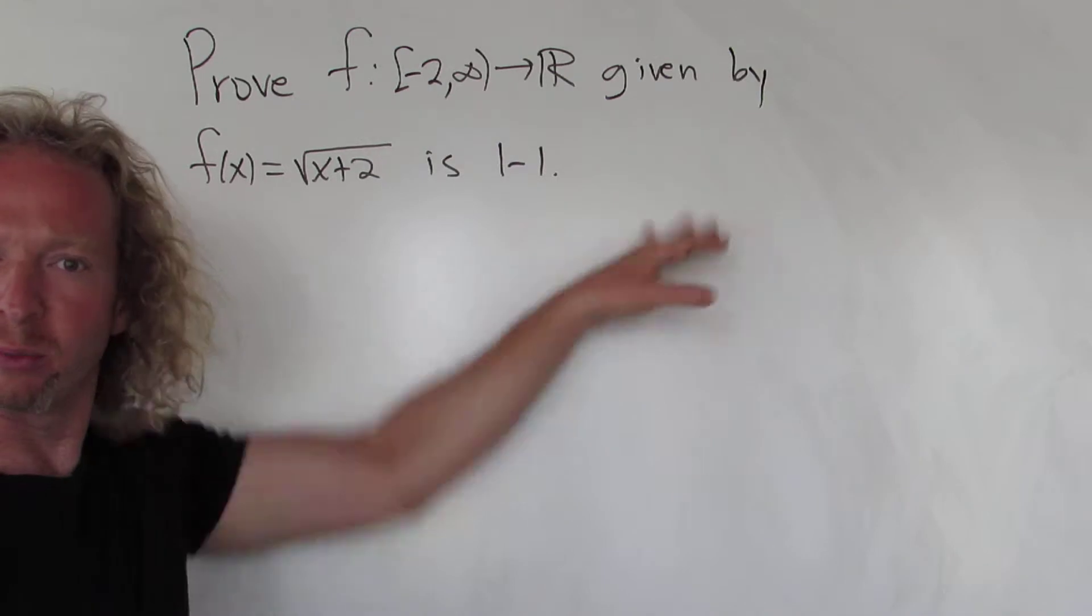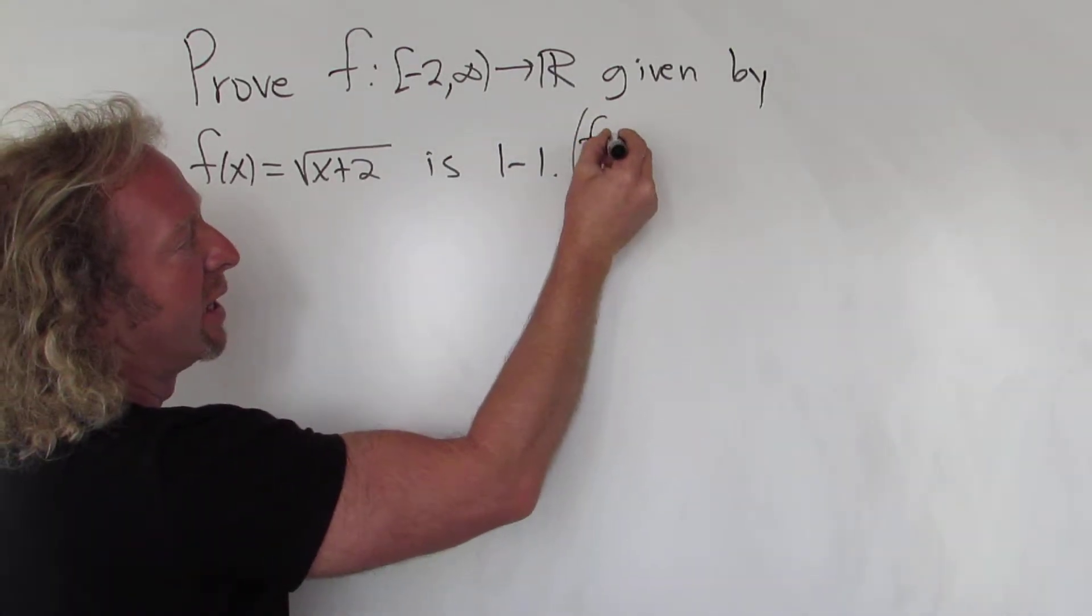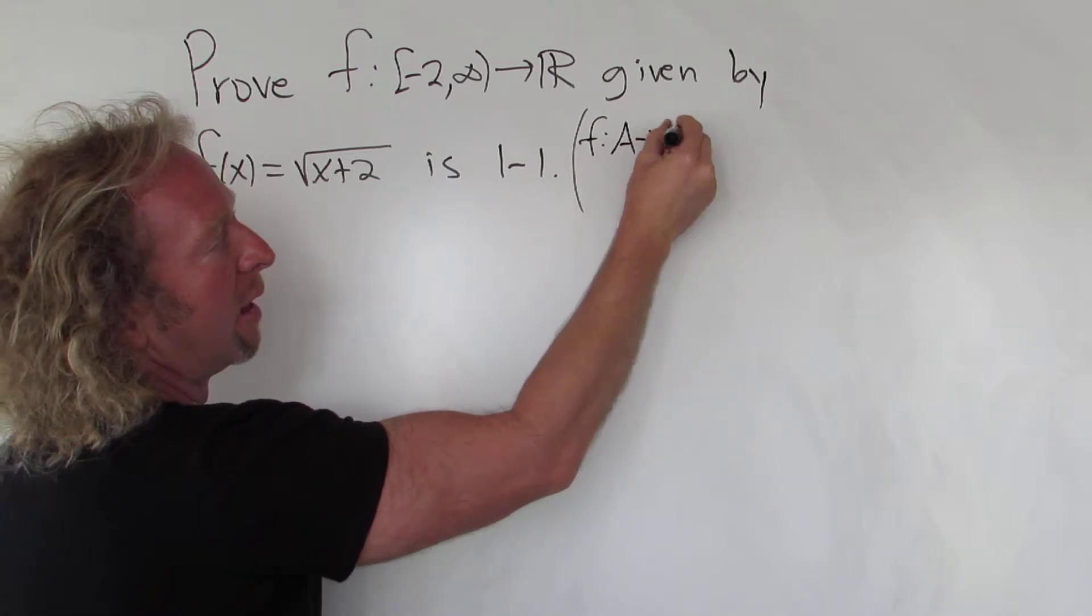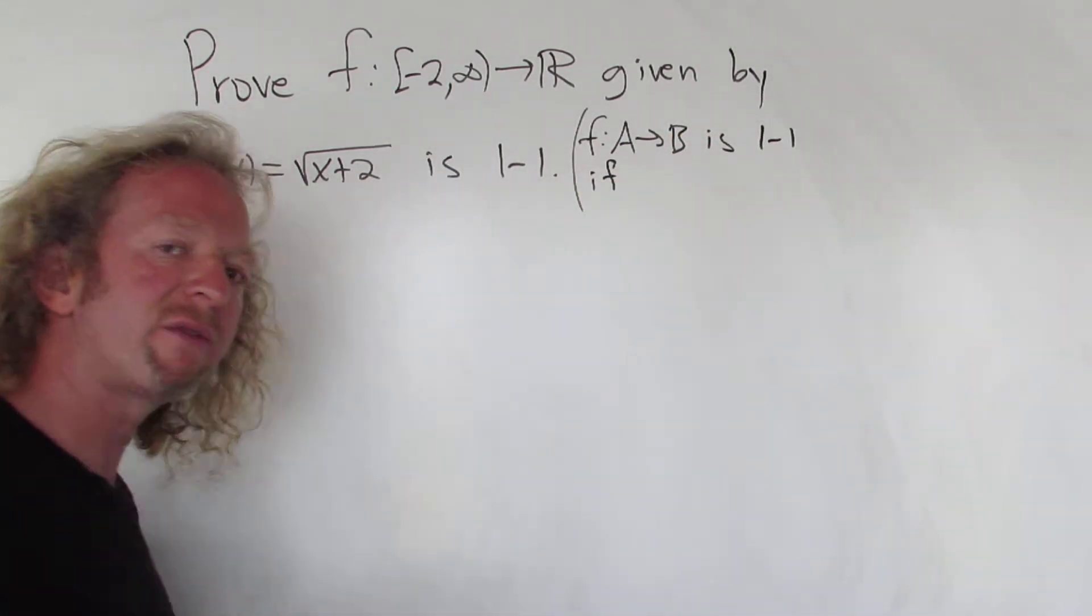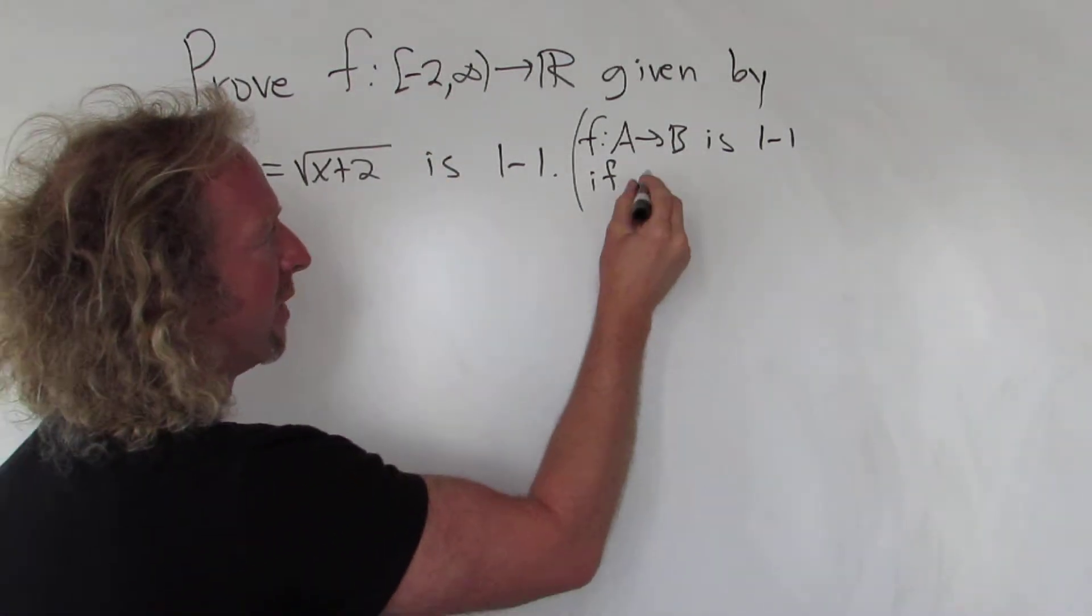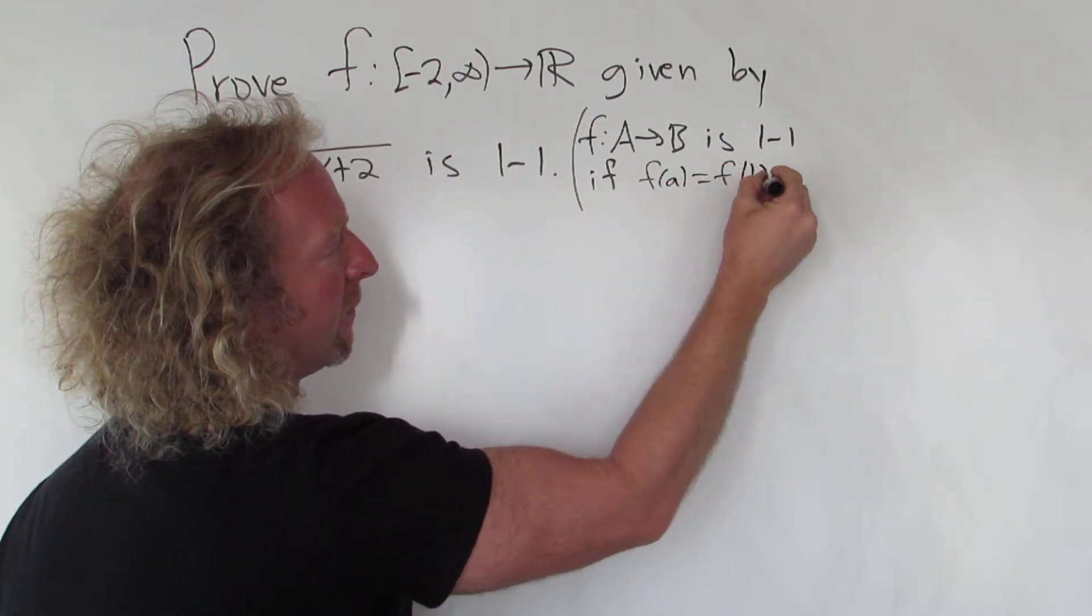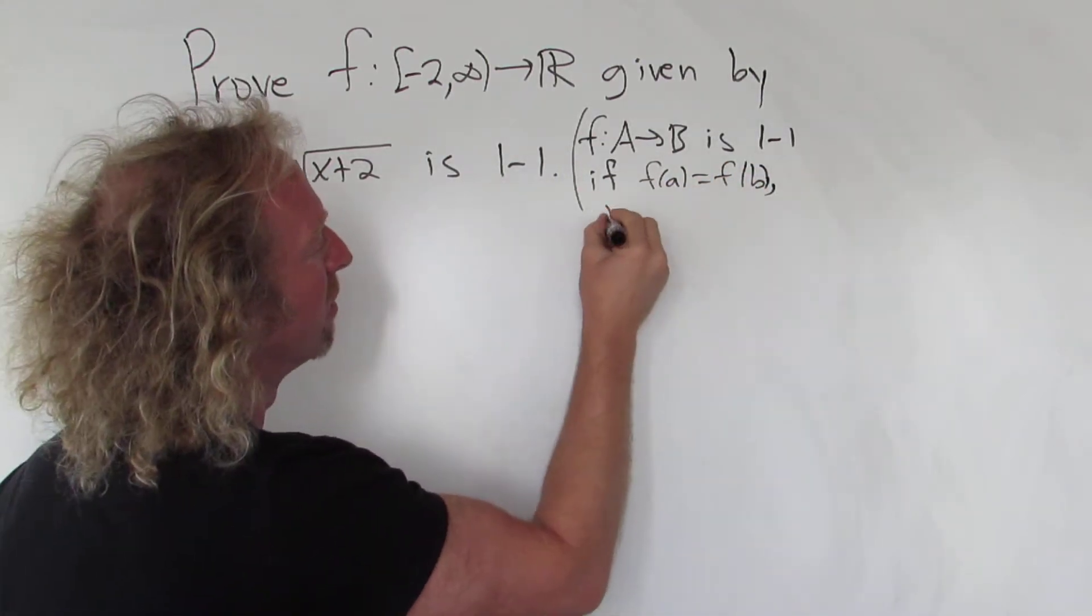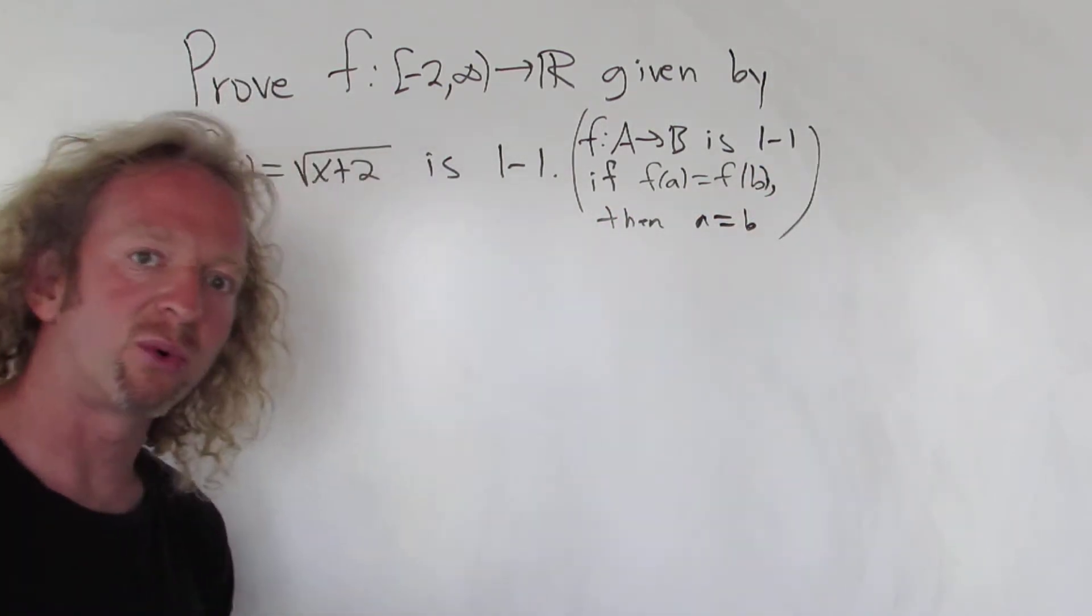Let me briefly write what it means for a function to be one-to-one. So f from A to B is one-to-one if whenever the outputs are the same, the inputs also have to be the same. So basically if you have f(a) equal to f(b), so equal outputs, then a is equal to b. That's the definition of one-to-one.